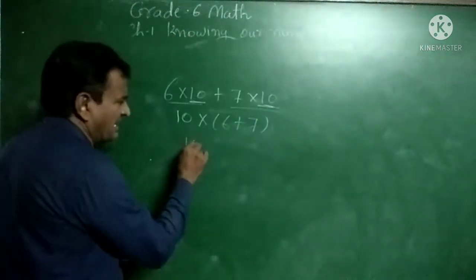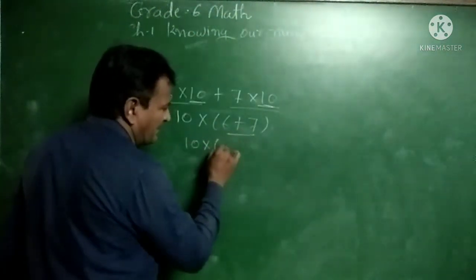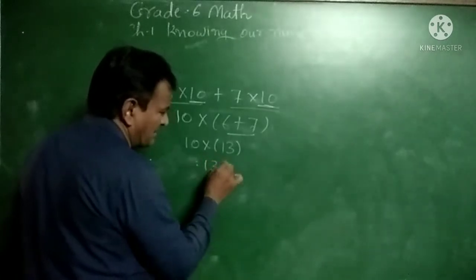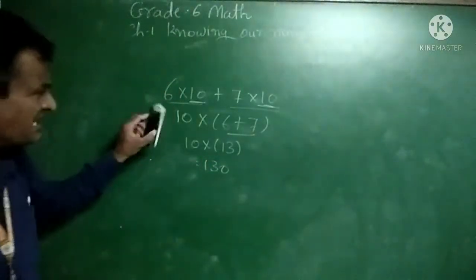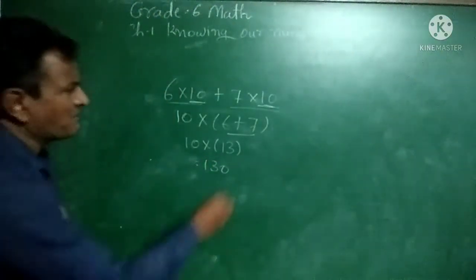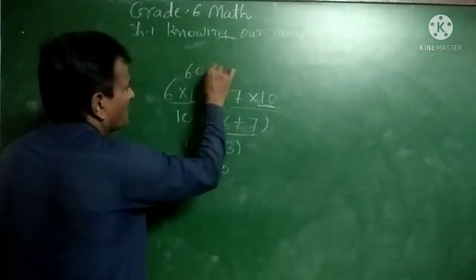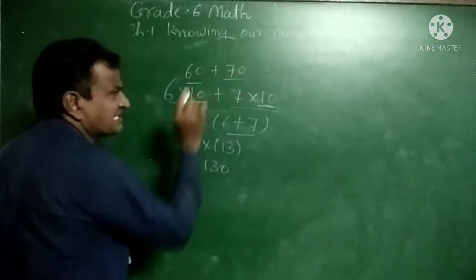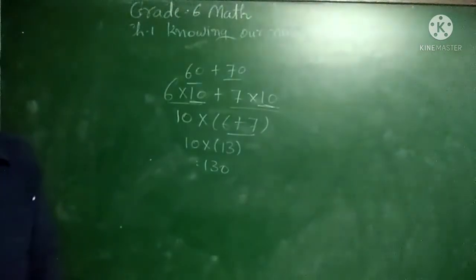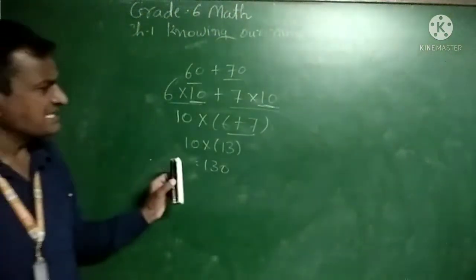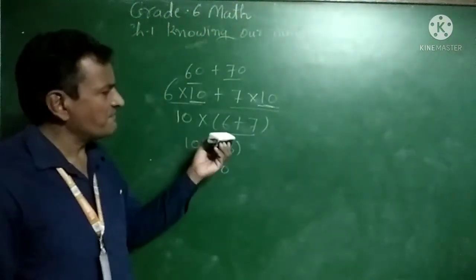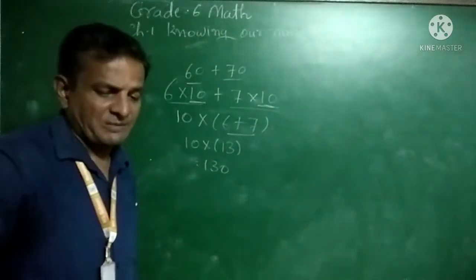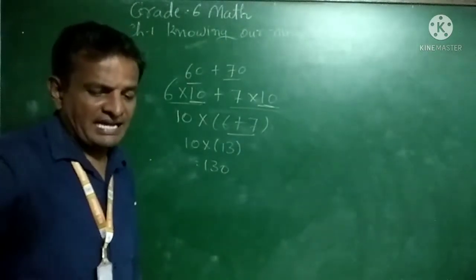So here, 10 into (6 plus 7) is 130. We can also multiply to get 60 plus 70, but that is a simple equation. For larger equations, we use brackets to simplify the example.